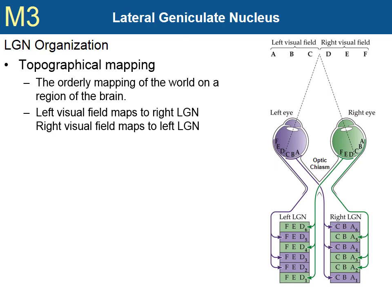At the optic chiasm, the nasal fibers cross over so that the fibers reaching each LGN correspond to only half of the visual field. The left LGN corresponds to the right visual field, letters D, E, and F, and the right LGN corresponds to the left visual field.